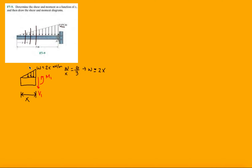Just like I was explaining at the beginning, the resultant force of the distributed load is the area of the triangle. The height is 2X, giving us a resultant force of X squared — that's base times height over 2, which is X times 2X over 2.